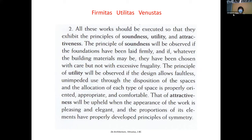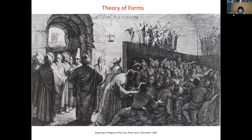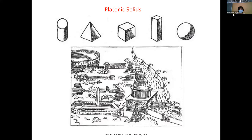Firmitas and utilitas you can gauge — what is good, what is bad — but when it comes to venustas, different eras will have different judgment. In this era you have the broader philosophy of the time. Plato has his theory of forms: everything originates from a perfect form and we are all shadows. It's a very singular world view.